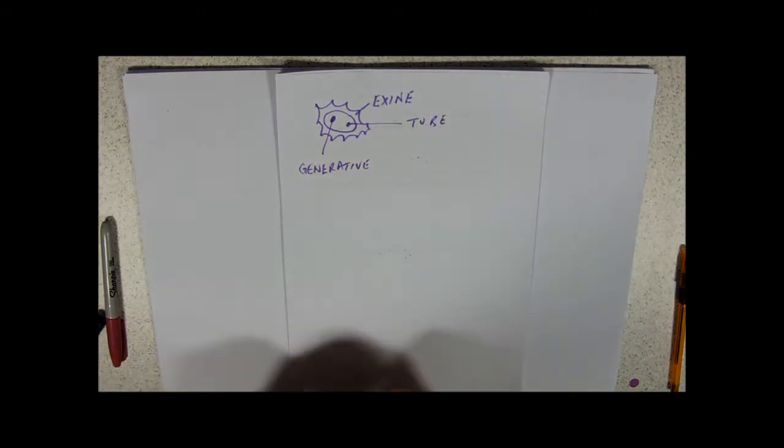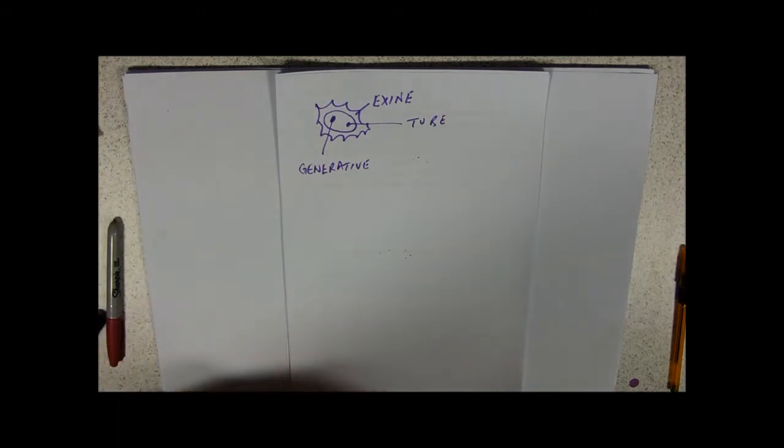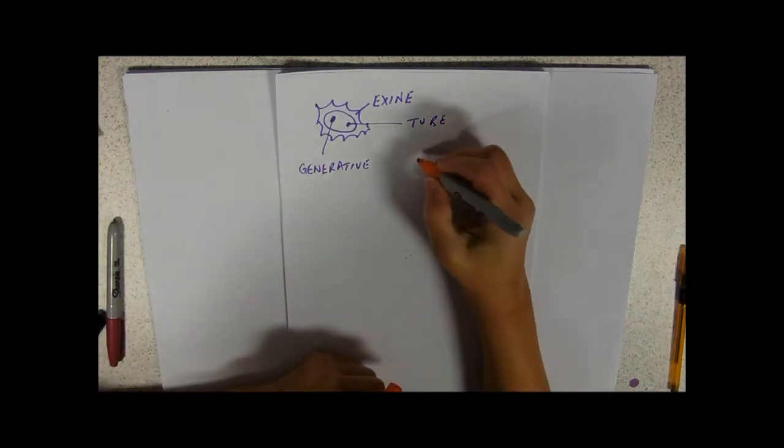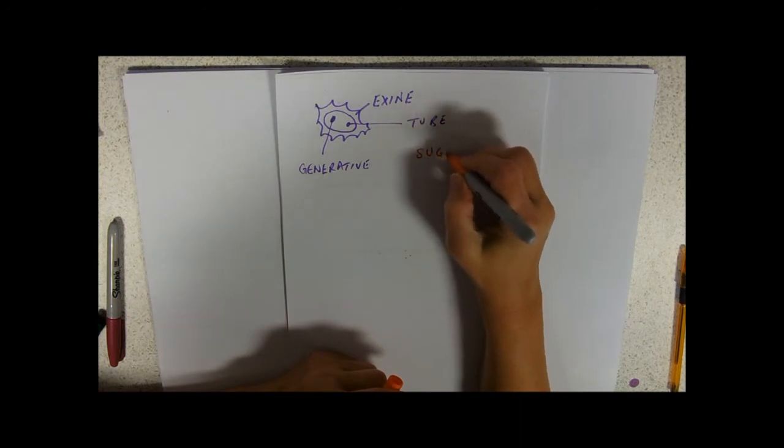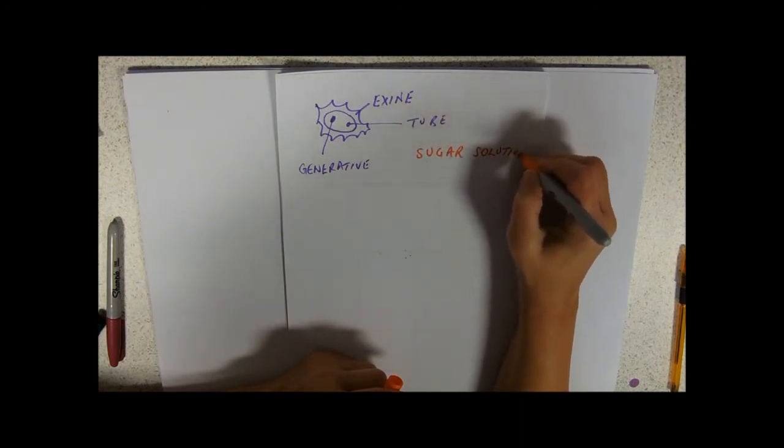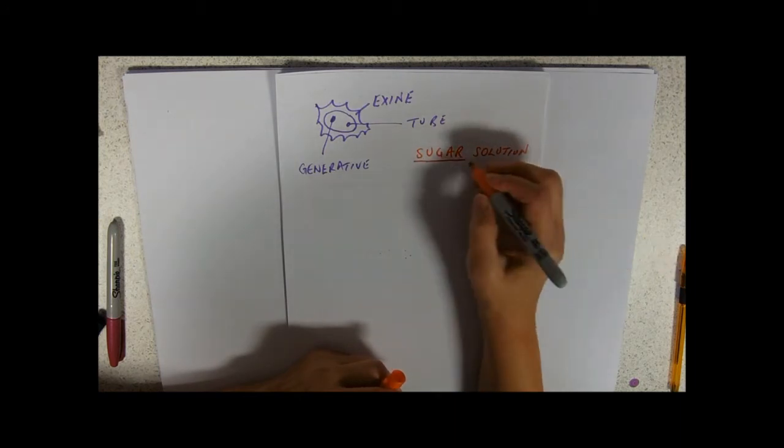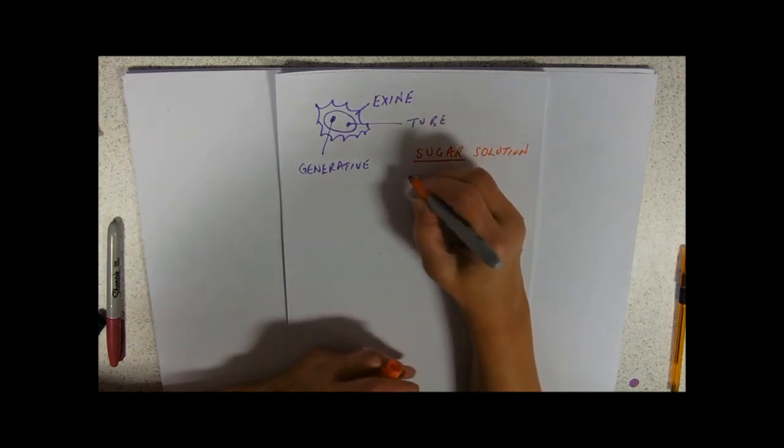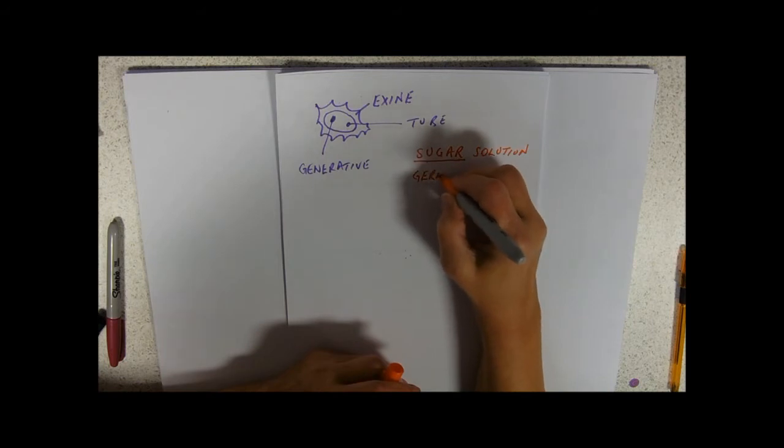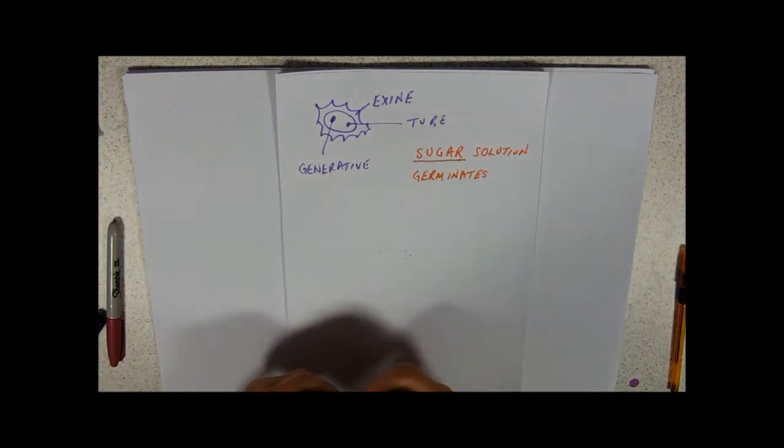When it lands onto the stigma, the first thing that happens is that the stigma has a sugar solution. Obviously sugar, we're talking about respiratory energy there, and the pollen grain germinates. Now don't confuse this with seed germination. The sugar solution makes the pollen grain germinate.